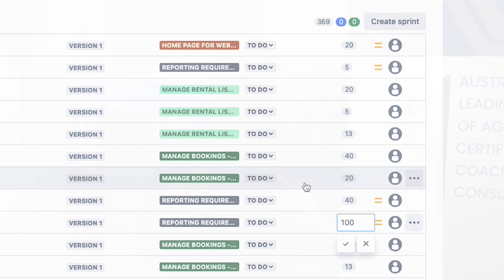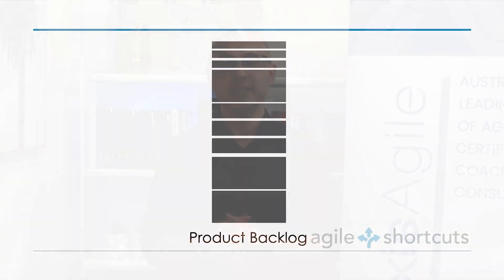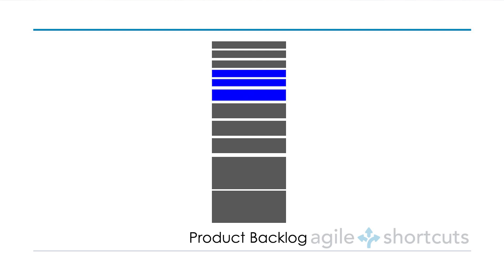I suggest using an approach called relative estimation — you might be more familiar with the term story points or velocity. If you're unsure how that all works, I do have a series on relative estimation on YouTube and I'll put a link to it in the description below. Once your team has identified the product backlog items that are too large, it's time to split them down into smaller product backlog items.